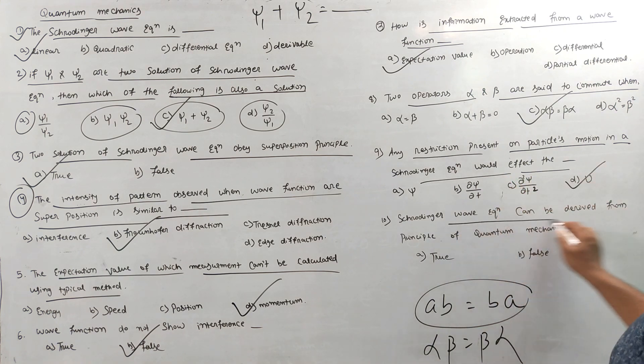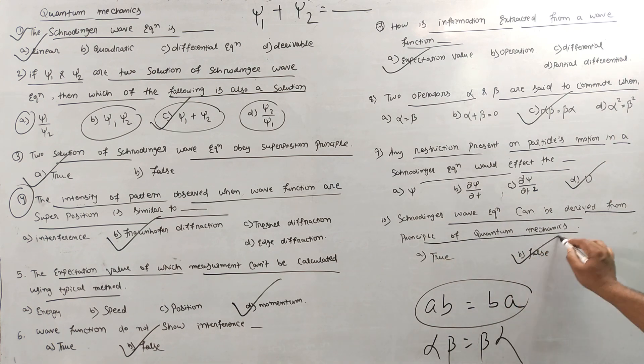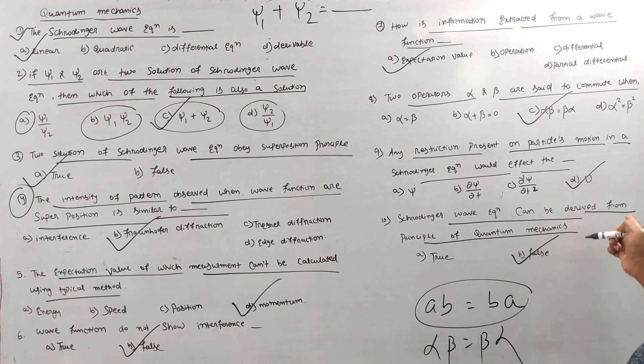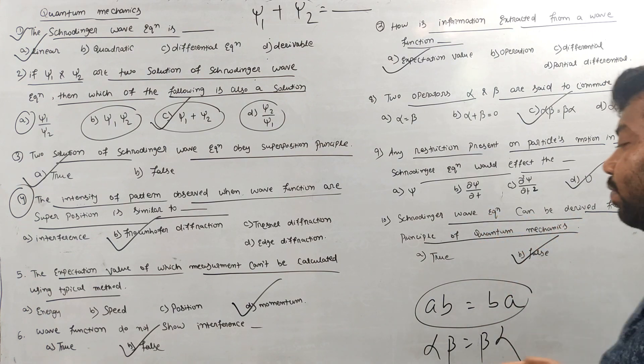The Schrödinger wave equation can be derived from the principles of quantum mechanics. This is false — the Schrödinger wave equation cannot be derived from the principles of quantum mechanics.